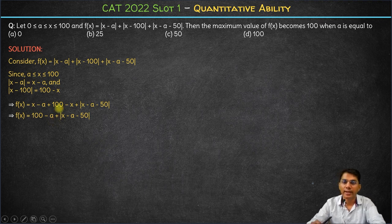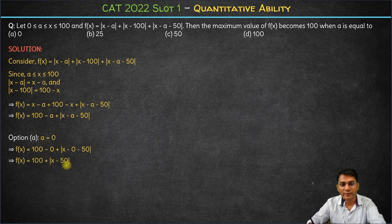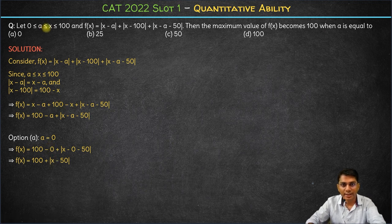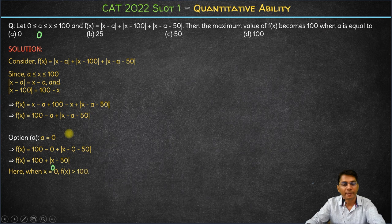The best way to solve this is by using the options and checking for which value of a the maximum value of f(x) is 100. Starting with option A, a = 0: f(x) becomes 100 + |x - 50|. Since x can range from 0 to 100, putting x = 0 gives |−50| = 50, so f(x) = 150. The maximum value is not 100 when a = 0, so this option is rejected.